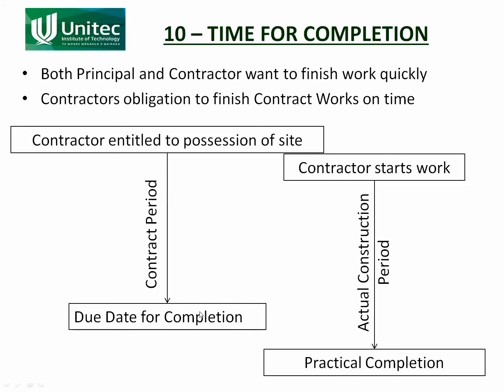Both the principal and the contractor want to finish the work quickly. The principal wants to have the contract works available to him so he can use them and make money out of it. The contractor wants to finish his obligations, make his money, and then move on to the next one. If a project runs too long, the contractor is going to start losing money. So there's a bit of a time pressure here.